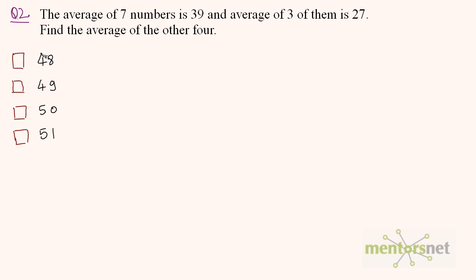Question 2: The average of 7 numbers is 39 and the average of 3 of them is 27. What is the average of the other 4? So the average of 7 numbers is 39. We can write 39 is equal to the sum of those 7 numbers divided by 7. So the sum is equal to 39 times 7, which is 273.